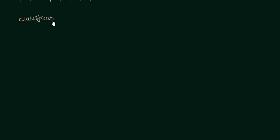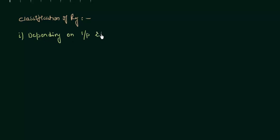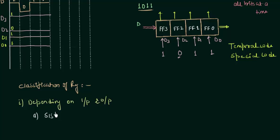Now the classification of registers. I will classify registers depending upon the input and output. The first type is SISO — Serial Input, Serial Output. We enter the data in serial manner and also extract the data in serial manner. The second one is SIPO — Serial Input, Parallel Output. You are entering the data in serial manner but getting the data out in parallel manner.